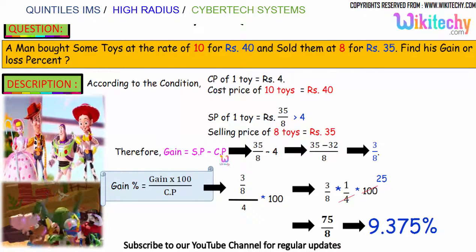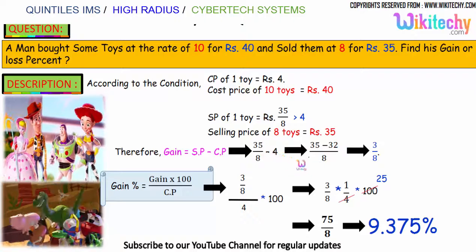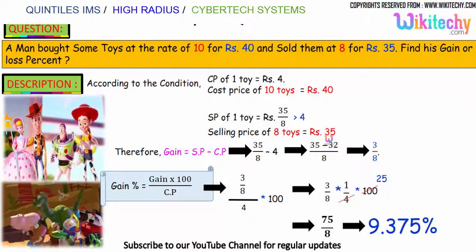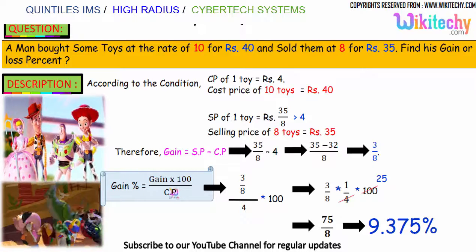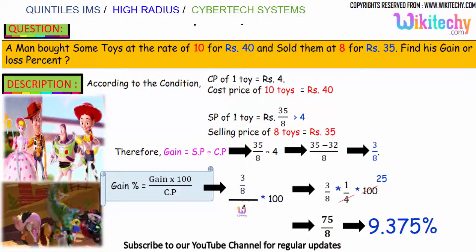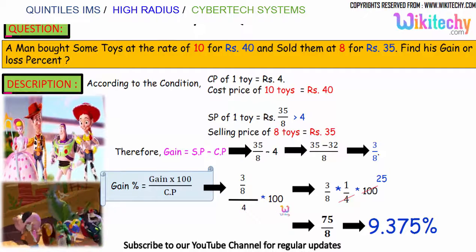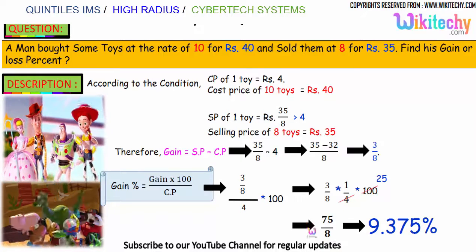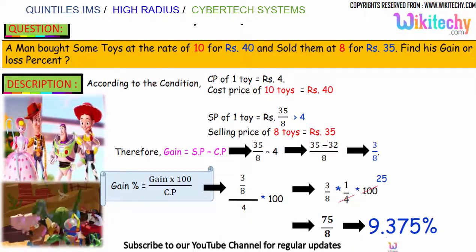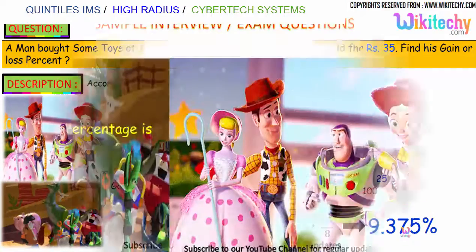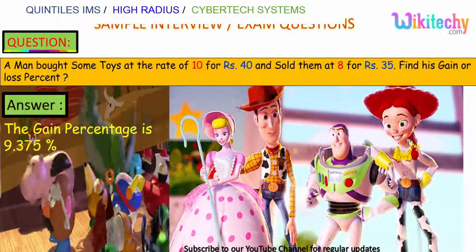Gain equals selling price minus cost price, so 35 divided by 8 minus 4, which gives 3 by 8. The gain percentage is gain into 100 divided by cost price: 3 by 8 divided by 4 into 100, giving 3 by 8 into 1 by 4 into 100, which equals 75 divided by 8. So the gain percentage is 9.375%.